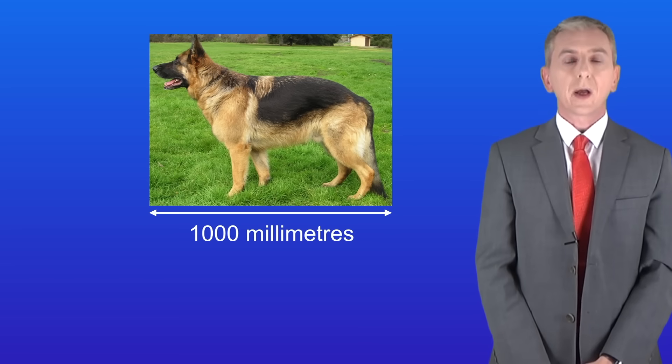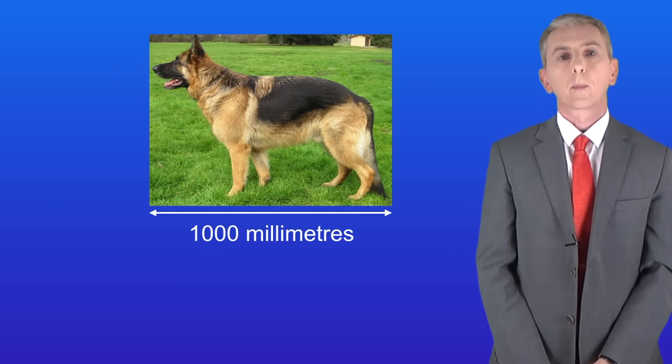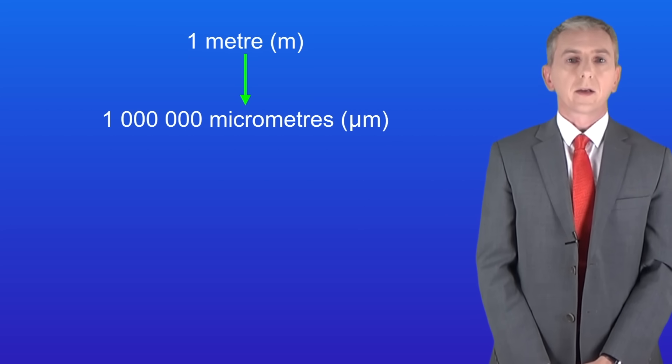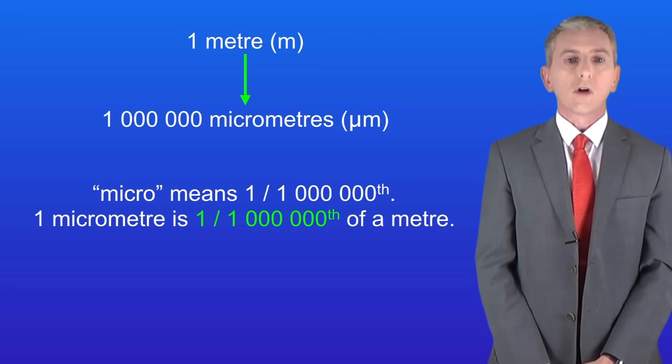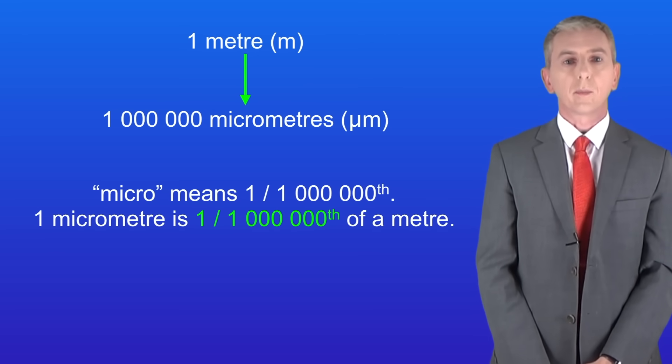In biology one millimeter is pretty big so scientists work with even smaller sizes. If we take a meter and divide it into one million equal parts then we've got a micrometer. The word micro means one millionth so one micrometer is one millionth of a meter.